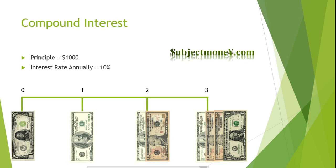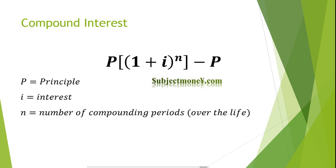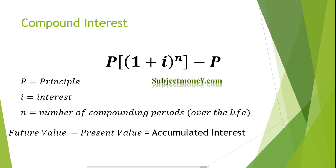Since interest is compounding, the amount of interest earned each year increases over the life of the investment. The formula to solve the amount of interest earned or paid in an investment or a loan is shown here. This formula could also be written as future value minus present value, which gives you the amount of interest that has been earned or paid.